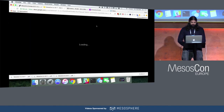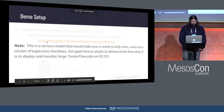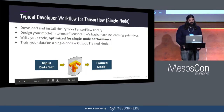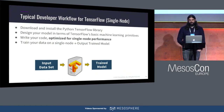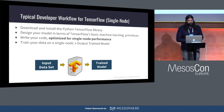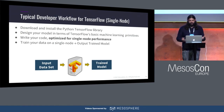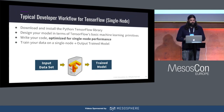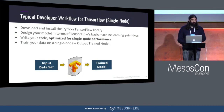Jumping back to the talk — I want to go through what the typical developer workflow for someone working with TensorFlow looks like, first in a single-node environment. The first step is to download and install the Python TensorFlow library. Then you design your model in terms of TensorFlow's basic machine learning primitives, write your code, optimize it for single-node performance, train your data on that single node, and out pops a trained model. Pretty straightforward in relative terms.